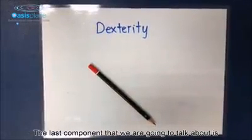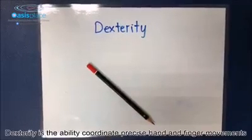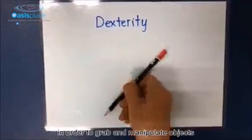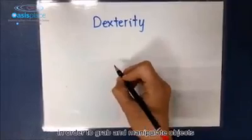The last component that we are going to talk about is dexterity. Dexterity is the ability to coordinate precise hand and finger movements in order to grab and manipulate objects.